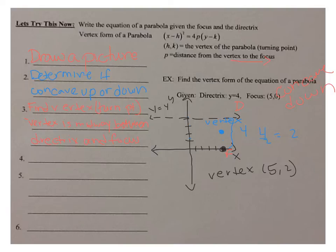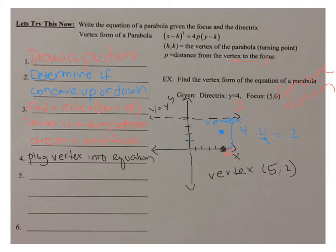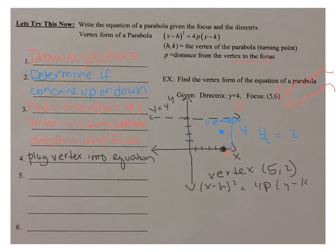Step four: plug the vertex into our equation. Our equation is (x − h)² = 4p(y − k), where (h, k) is the vertex. With vertex (5, 2), my equation so far is (x − 5)² = 4p(y − 2).